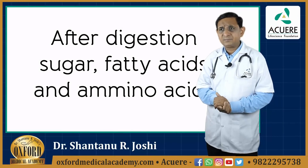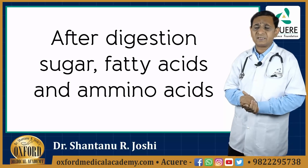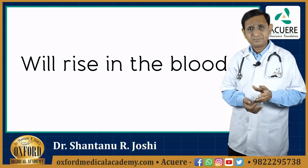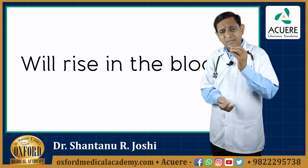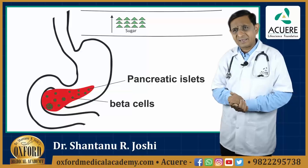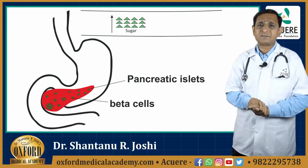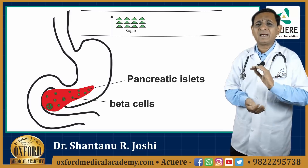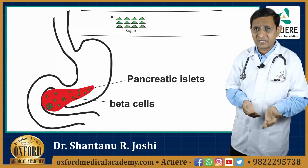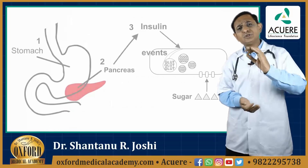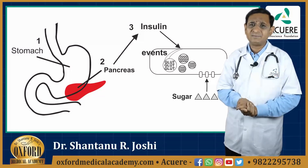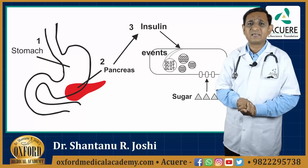After digestion, sugar, fatty acids and amino acids will rise in the blood. We will take one example of sugar and go forward. When the sugar level in the blood rises, it will stimulate the beta cells of the islets of Langerhans of the pancreas to secrete insulin. This insulin is very important because entry of sugar inside the cell depends upon insulin.